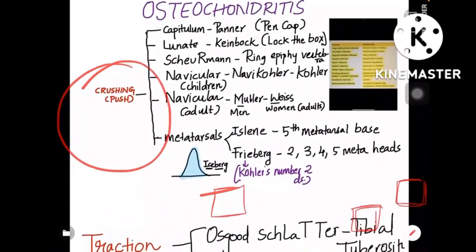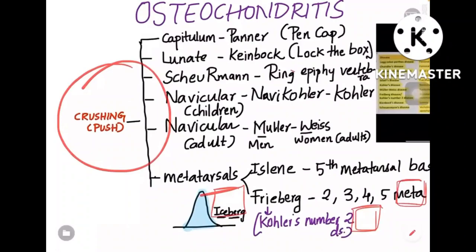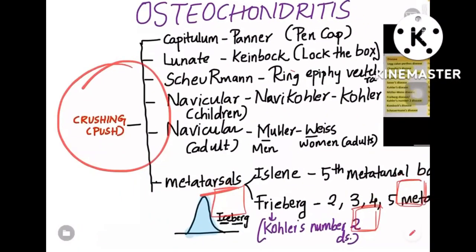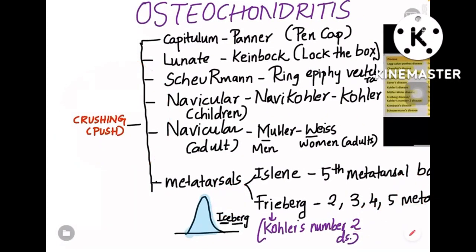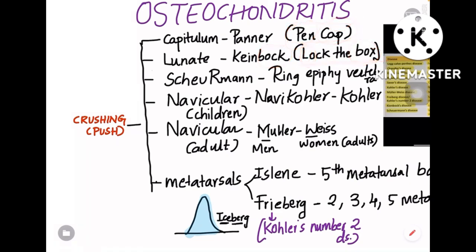Now the crushing or push type. Osteochondritis of the capitulum is called Panner's disease — remember it like 'pen cap': Panner's is capitulum. For the lunate, remember 'lock the box' — lock is lunate, and the box is Kienböck's. So Kienböck's disease is osteochondritis of the lunate.